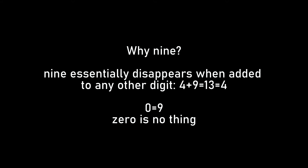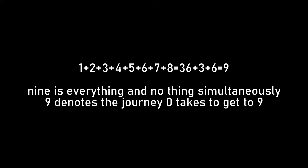In this video I will be solely focusing on the single digit code, which is 0 to 9. 9 is the same as 0, as it essentially disappears when you add it to any other digit. 0 is source — no thing. 9 is simultaneously everything and no thing.